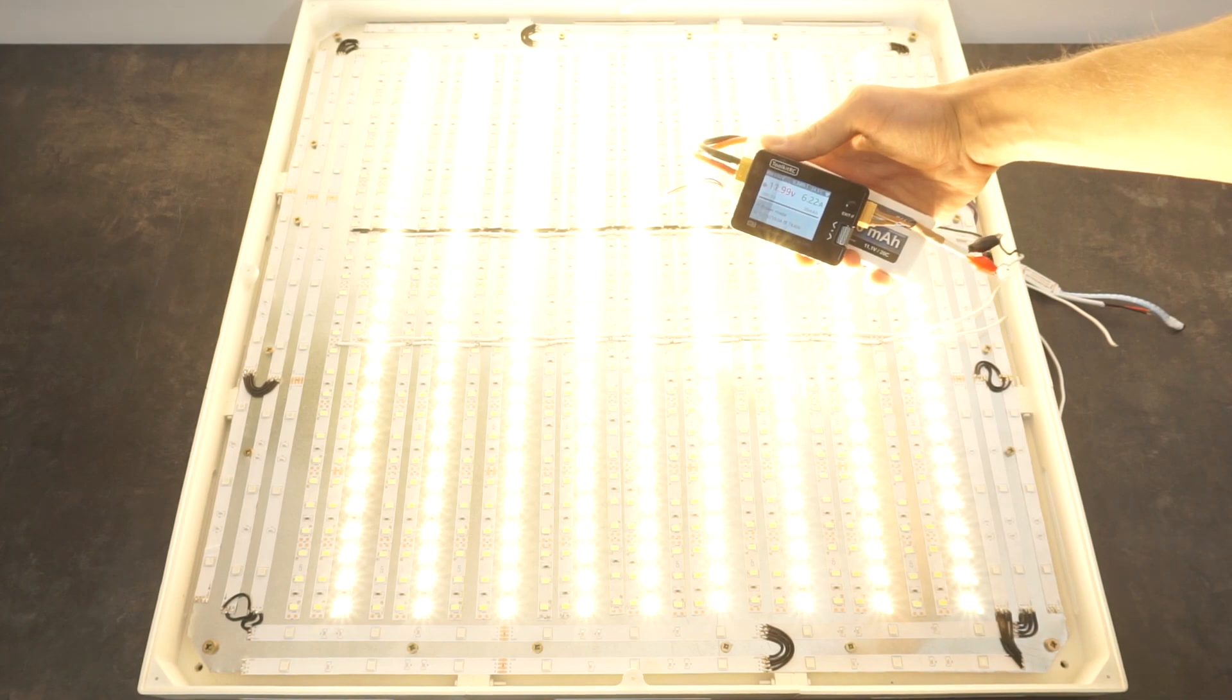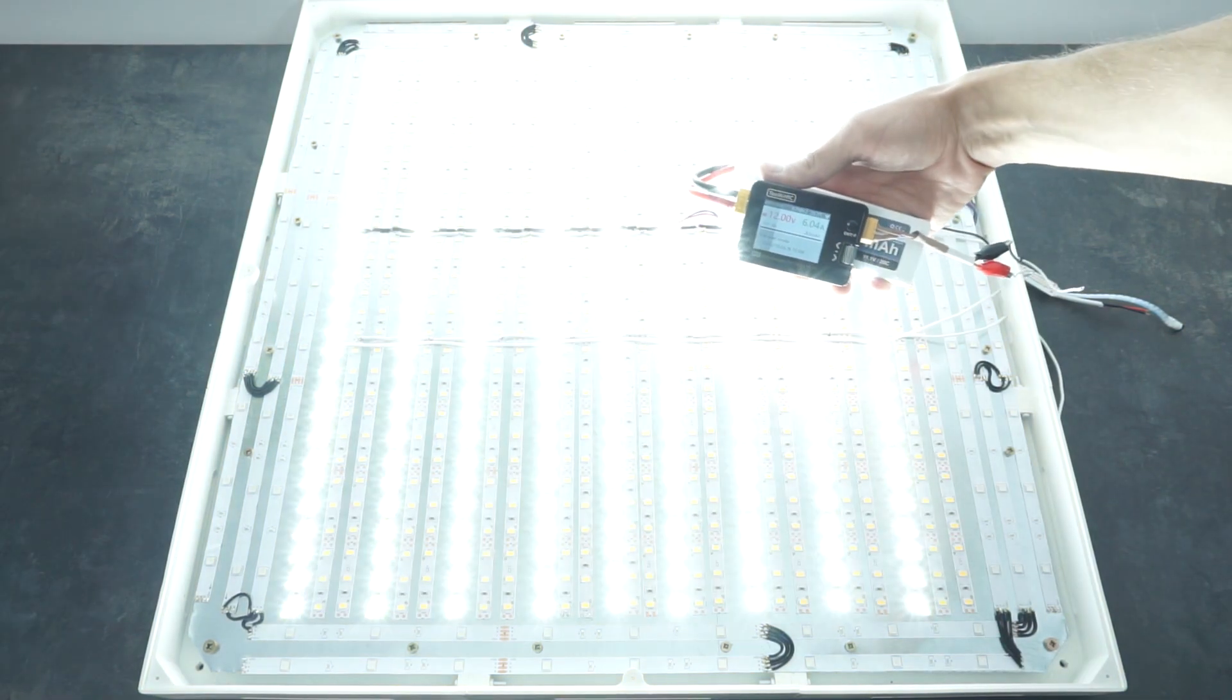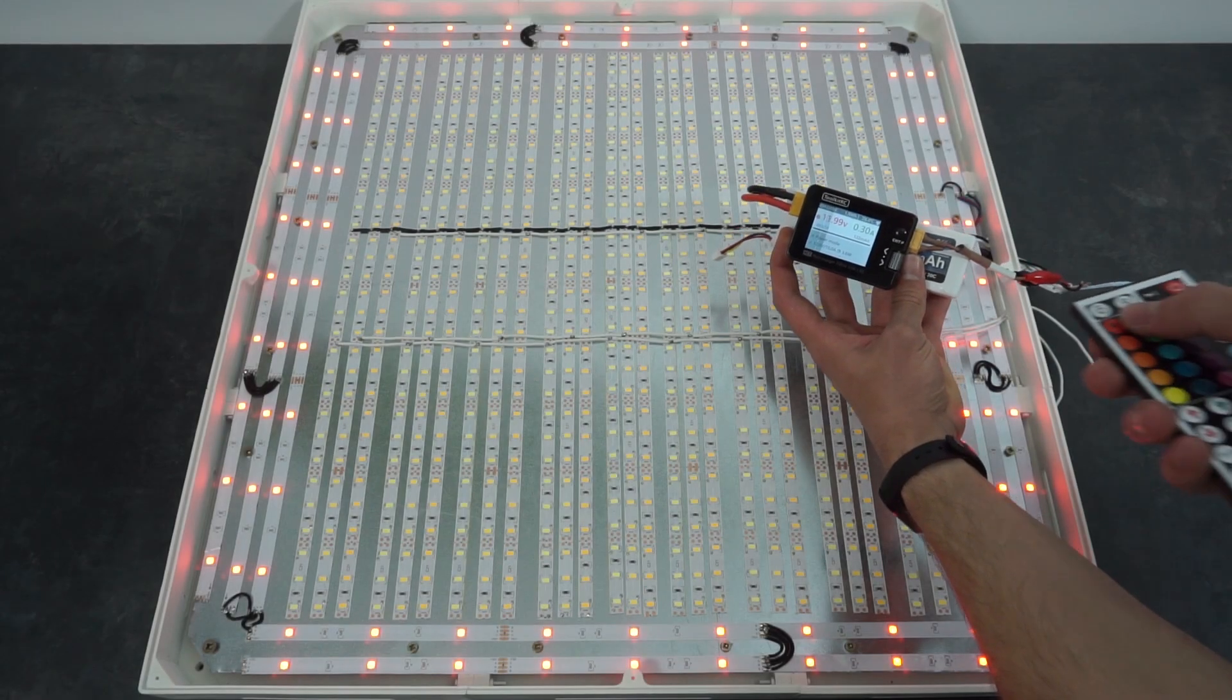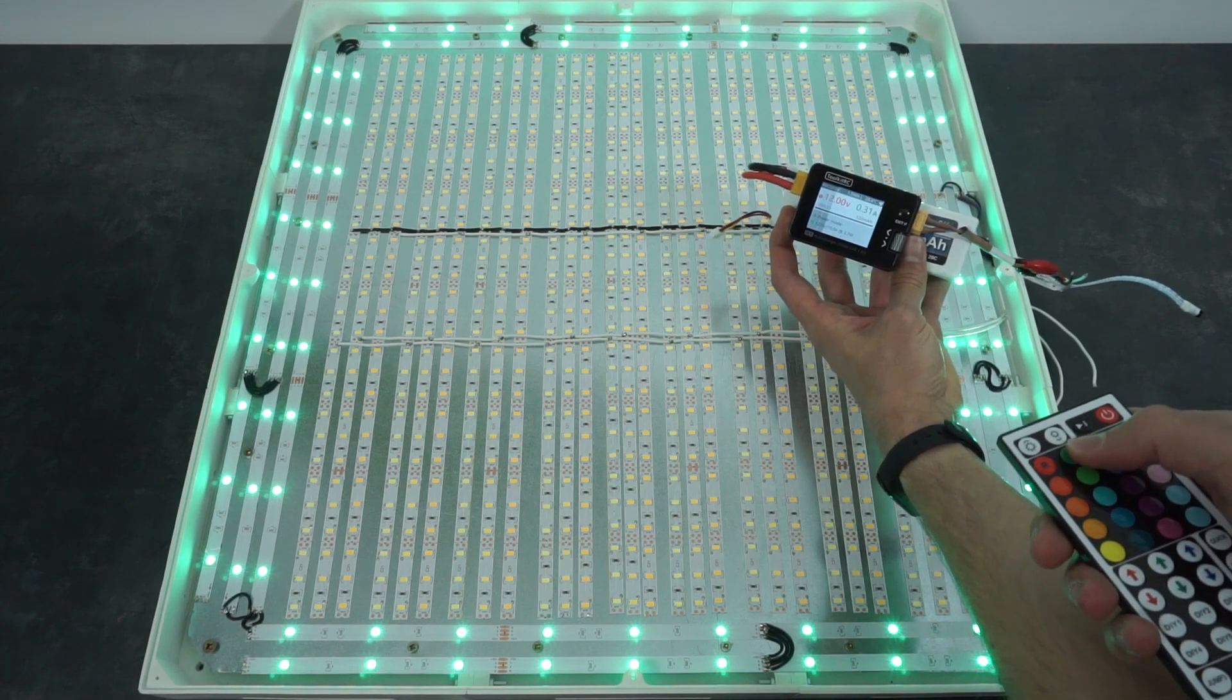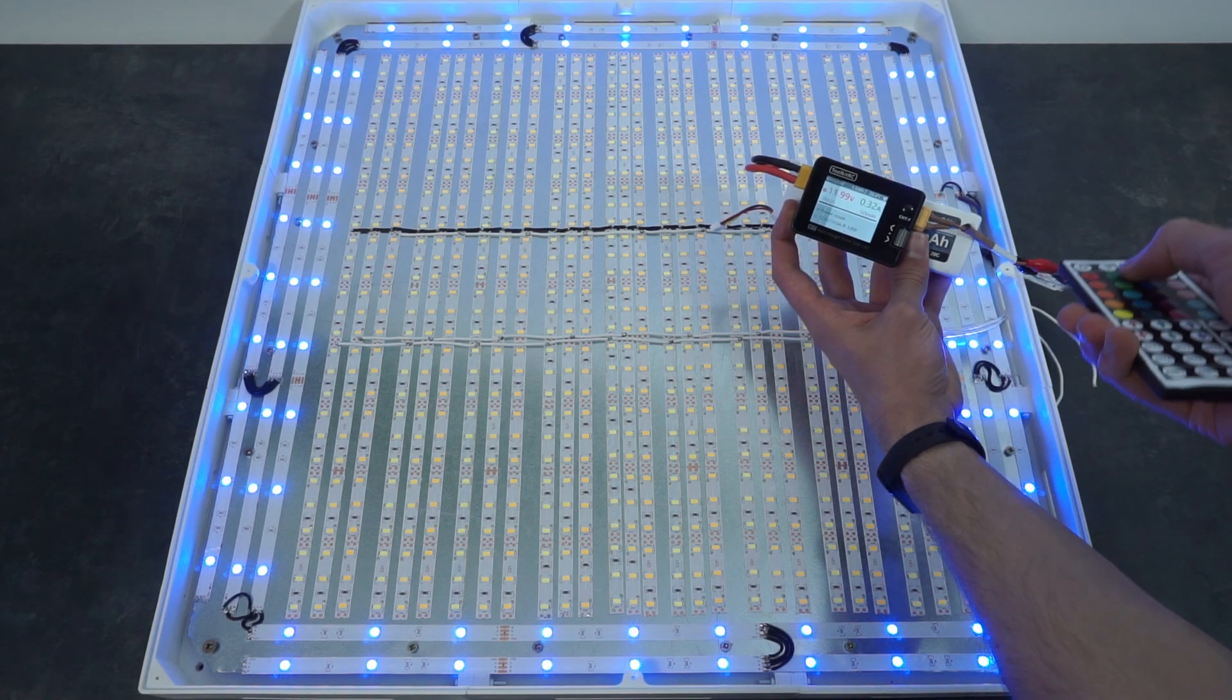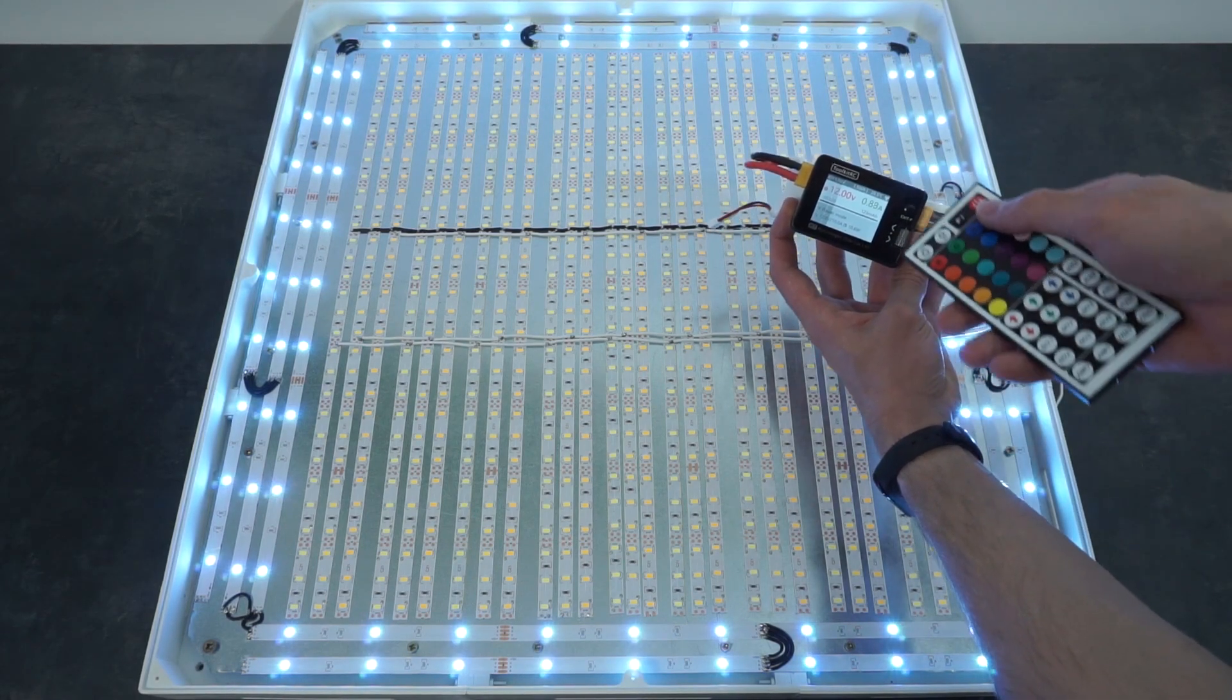And now if we measure the power draw, each white color consumes about 6 amps, which at full power would give us 18 amps total. The RGB strips use much less power: about 0.3 amps for each of the primary colors and about 0.9 amps for white, which is a combination of red, blue, and green, so it makes sense.